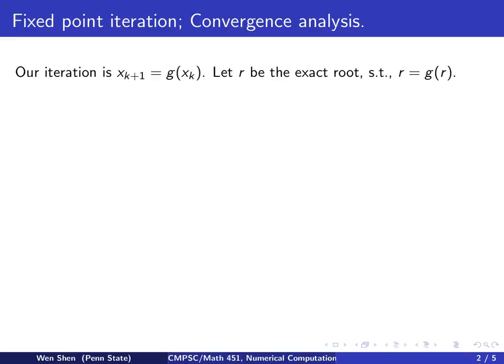Our iteration is x_{k+1} = g(x_k), and let r denote the root, that is, the fixed point, such that r = g(r).